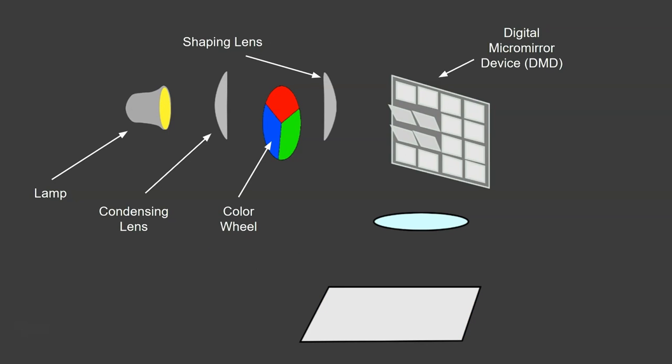The enlarging lens just takes the light and enlarges it so that you can send it onto the projector screen where it will be displayed. Okay, so let's have a look at that in action.